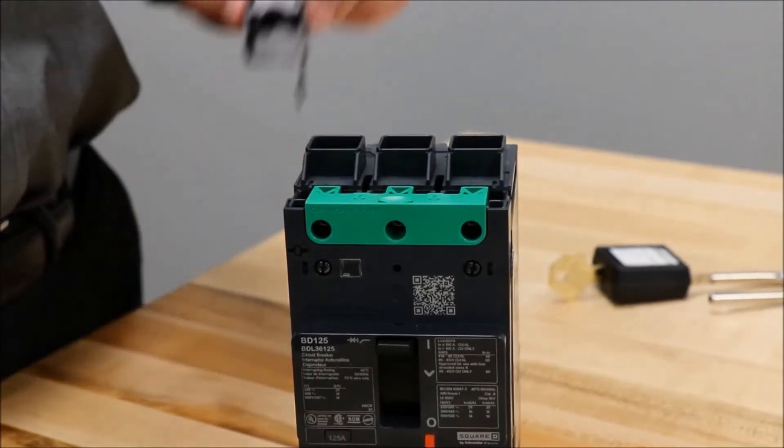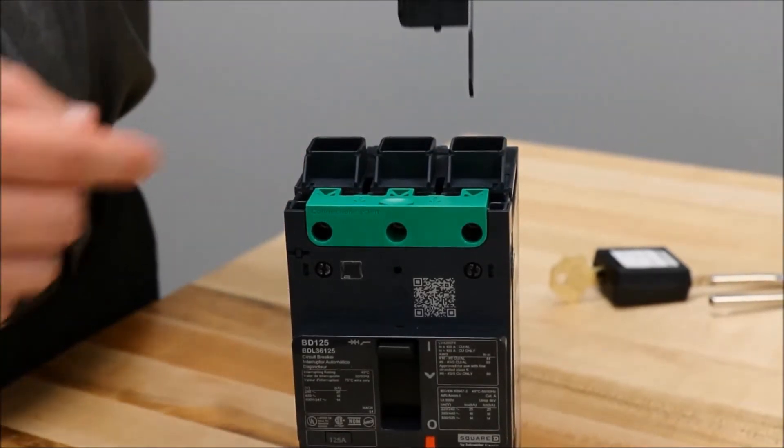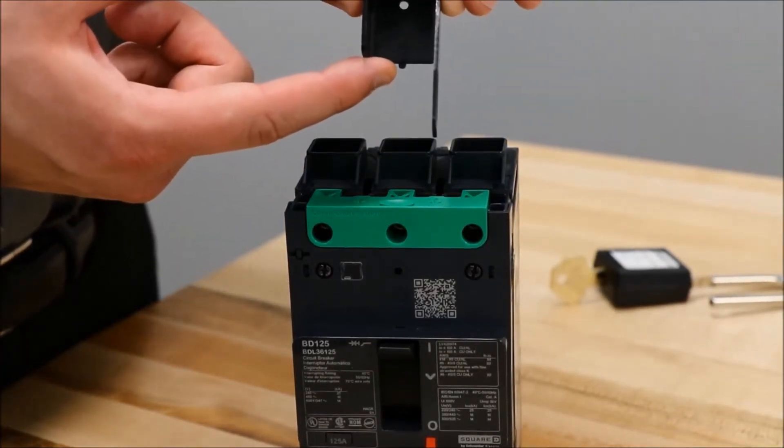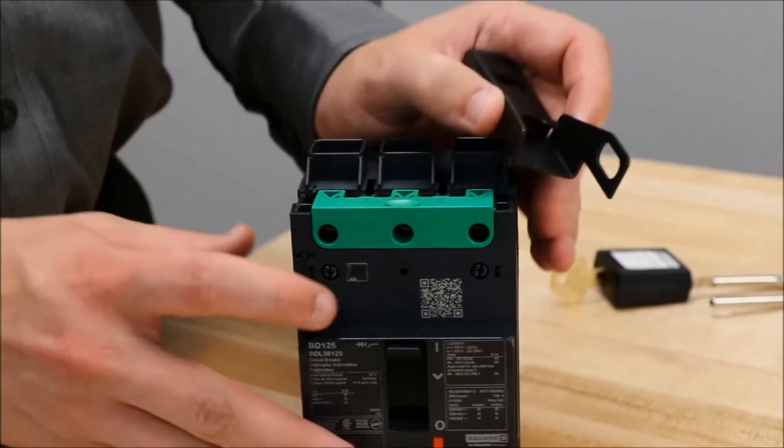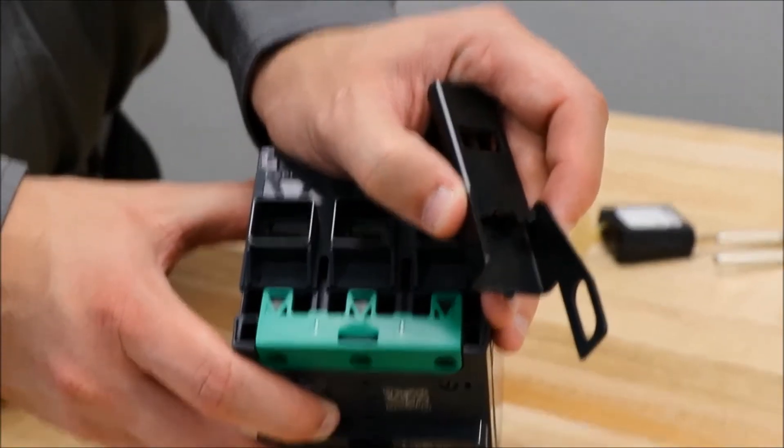You'll place the device onto the breaker by fitting this tab into this slot on the circuit breaker.